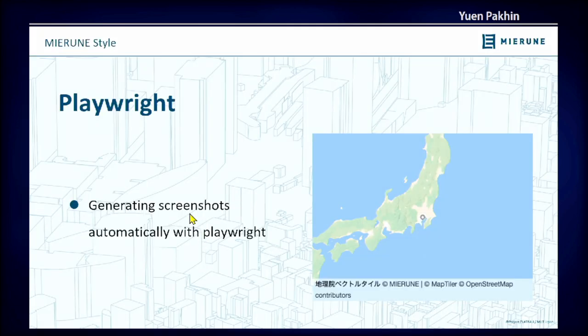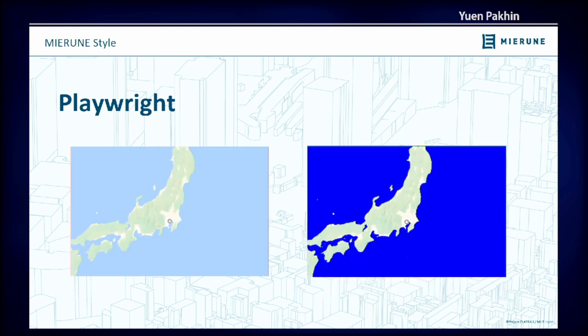The other tool that we have developed uses Playwright to generate screenshots of a predefined area automatically, so that we can have a much easier time comparing between different vector map styles. For example, after changing my style.json so that all water features are a lot bluer, I can just run this tool and it will generate a picture for me and perhaps my boss who reviews my code to compare between different styles.